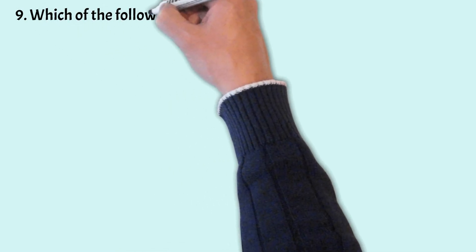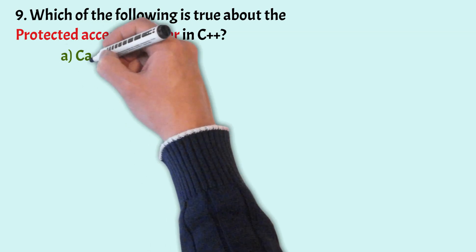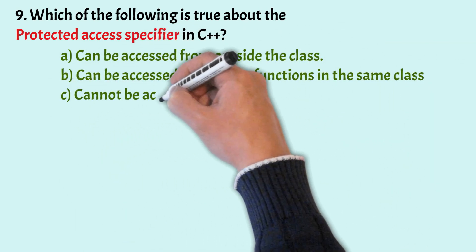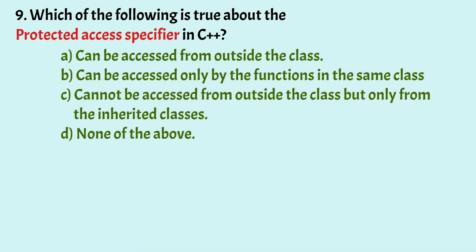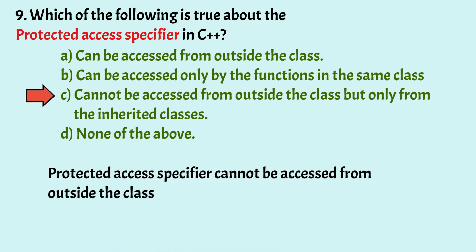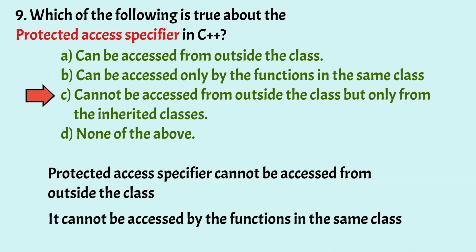Which of the following is true about the protected access specifier in C++? The options are: can be accessed from outside the class; can be accessed only by functions in the same class; cannot be accessed from outside the class but only from inherited classes; and none of the above. The correct answer is option C. Option A describes the public access specifier, option B describes the private access specifier, and option C describes the protected access specifier.